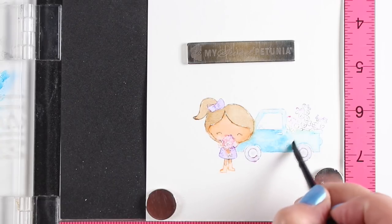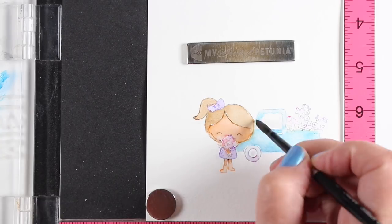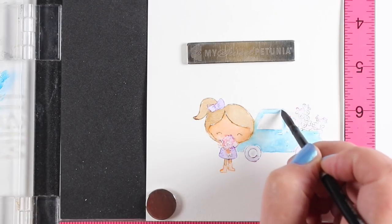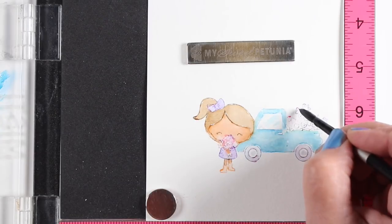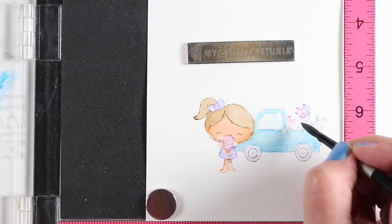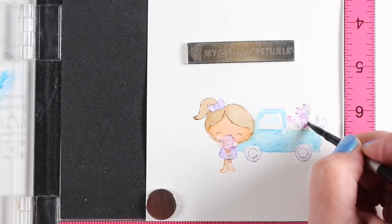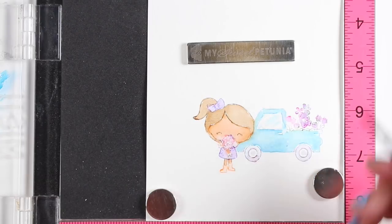So you could sit and stamp a whole bunch of these little girls and just keep practicing with them to get the hang of the technique before deciding what you want to do on a card. Just practice and get the feel of it because it does take a little thought to get used to how to color on the stamp to have it transfer over the way that you want it to.